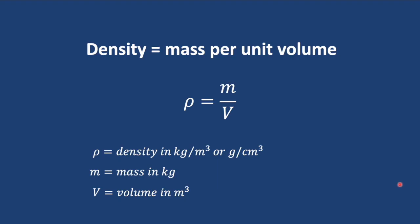The density of a substance is its mass per unit volume. The symbol we often use is the lower case Greek letter rho. Mathematically it is calculated by dividing the mass by the volume. Mass is usually expressed in kilograms and volume in cubic meters, so our density is in units of kilograms per cubic meter or grams per cubic centimeter.